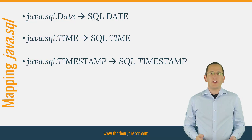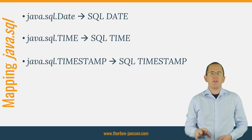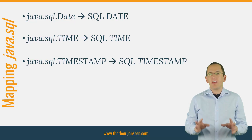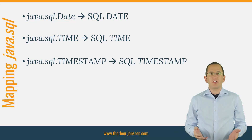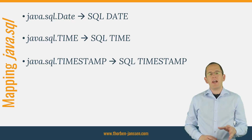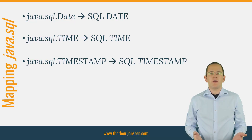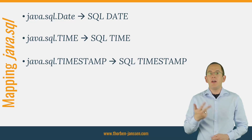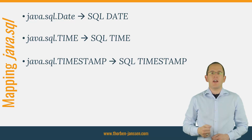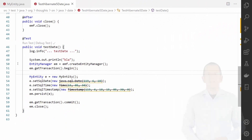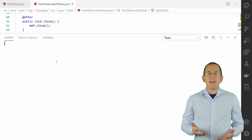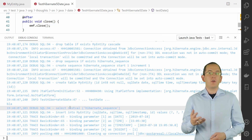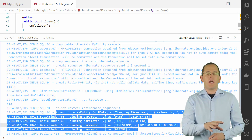The mappings of the java.sql classes Date, Time, and Timestamp are easier than the previously shown mappings of the java.util classes. That's because the classes in the java.sql package match the SQL data types, which enables your persistence provider — for example, Hibernate — to identify the mapping automatically. So, without providing any additional annotations, java.sql.Date gets mapped to SQL date, java.sql.Time gets mapped to SQL time, and java.sql.Timestamp gets mapped to SQL timestamp. You can then use these attributes in your business code to store date and time information in your database, and after activating SQL statement logging, you can see that Hibernate maps the entity attributes to the corresponding SQL types.